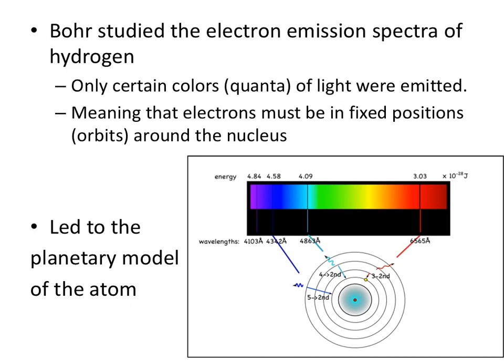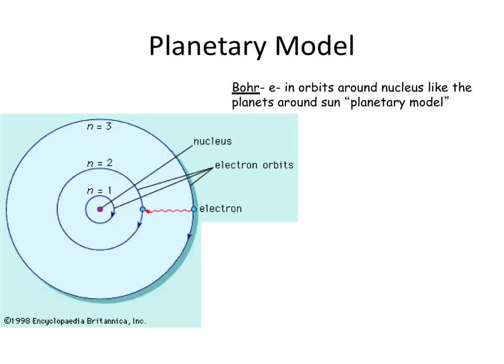Along comes Bohr, who looked at electron emission spectra — specifically the colors of light emitted from hydrogen when exposed to different quanta of energy. He found that hydrogen always gave off specific colors and specific wavelengths of light, which led him to believe that electrons are in fixed positions or orbits around the nucleus. We call this the planetary model. Electrons rotate around the nucleus at a specific distance in a specific orbit, kind of like the planets revolve around the sun.